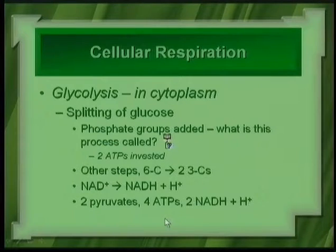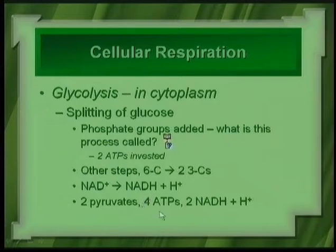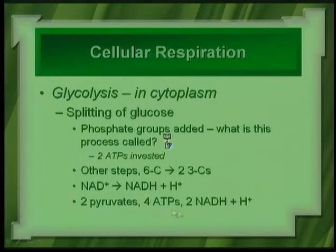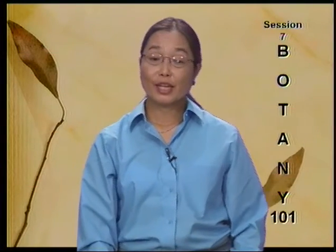Think of it like a paycheck — you get paid $500 but they take $150 out, so you net $350. Similarly the cell nets two ATPs from glycolysis, and also nets two NADHs which carry electrons plus hydrogen ions. After glycolysis, you have net two ATPs.